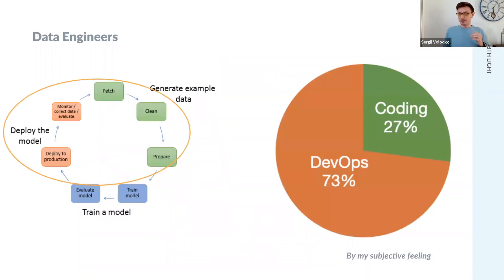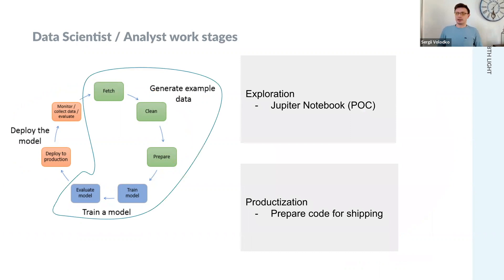In the ideal world of data scientists and data analysts, they would do these two blue things - train models and evaluate them. But in real world, you need to deal a lot with data and infrastructure and code, things that data scientists are not experts in. And with that, data engineers help. But at the same time, it's kind of an end-to-end process.